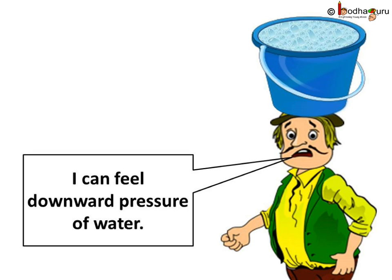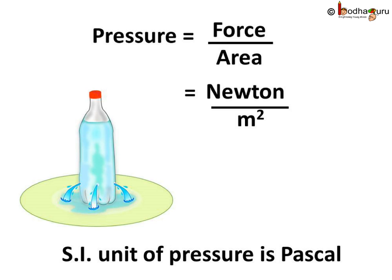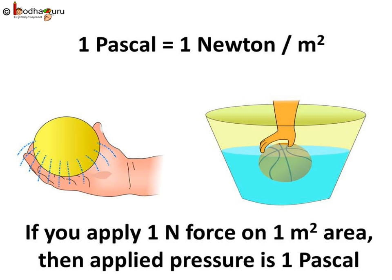So now you understand what pressure is. You may ask: what is the unit of pressure? We know the unit of force is Newton, and the unit of area is meter square, so the unit of pressure would be Newton per meter square. In the SI system, the unit of pressure is Pascal. 1 Pascal is equal to 1 Newton per meter square. This means if you apply 1 Newton of force on 1 meter square area, the applied pressure would be 1 Pascal.